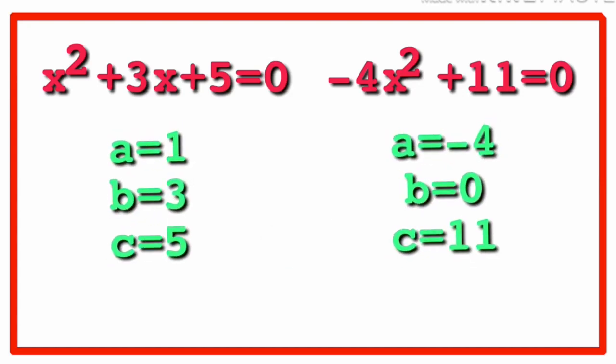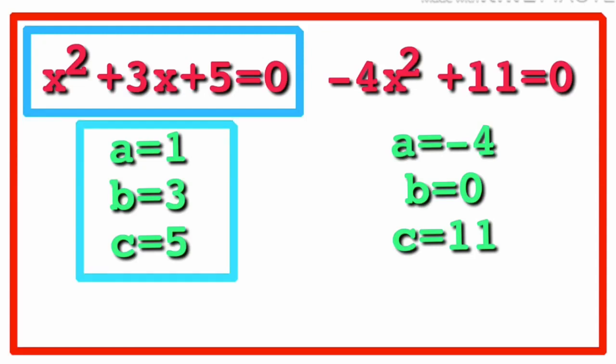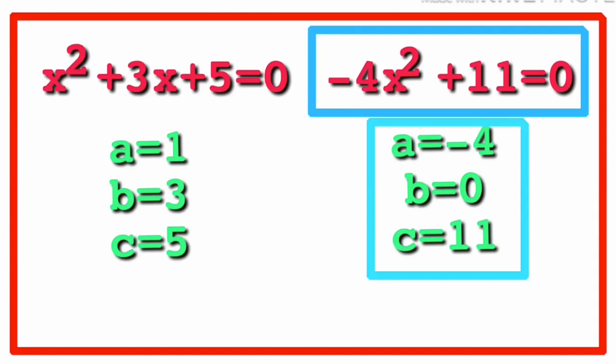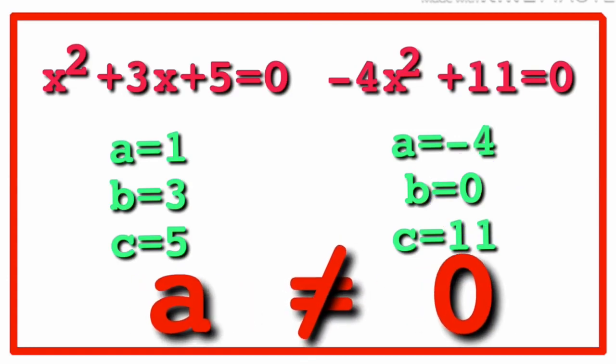Here are the values. For x squared plus 3x plus 5 equal to zero a is 1, b is 3, while c is 5. For negative 4x squared plus 11 equal to zero a is negative 4, b is zero, c is 11. Notice that the value of coefficient x in the second case is zero and that's not a problem at all. The important condition is that a must not be equal to zero.